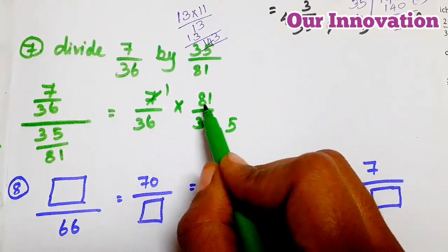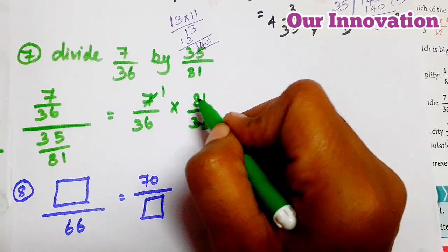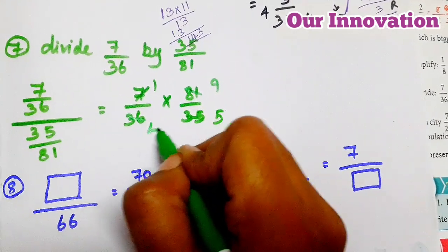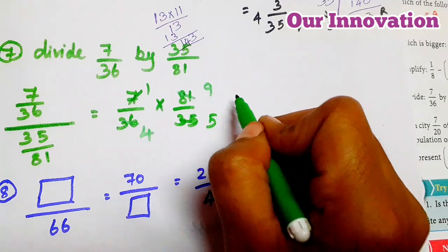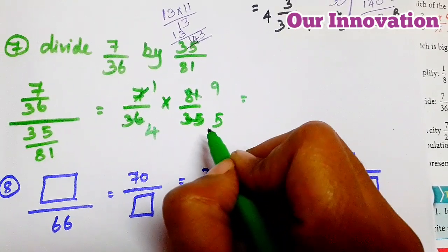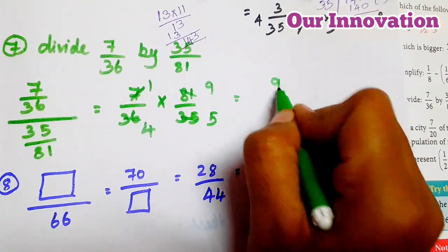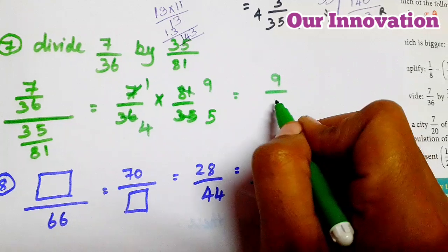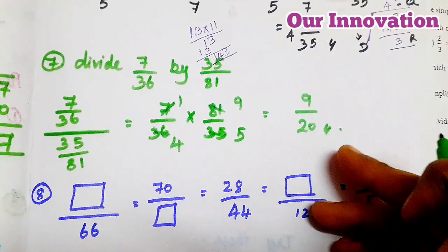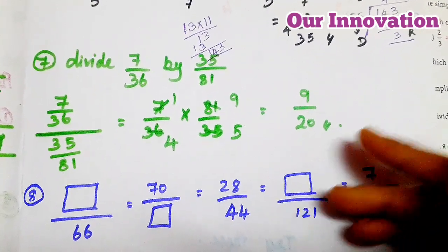So 81 and 36 — cancel using the 9 times table: 9's are 81, 4 × 9's are 36. So we cancel, giving 1 × 9 = 9/4. Then 5's are 20, so this is the answer: 9/20.